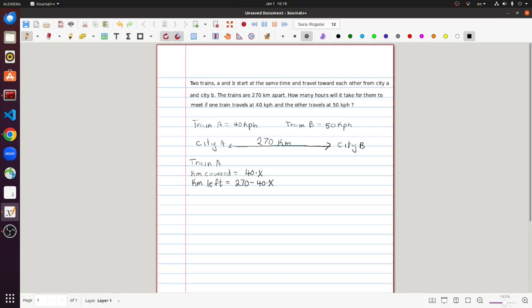And then for train B, similarly, it would be these. These are the formulas for train B. The kilometers covered is 50x and the kilometers left is 270 minus 50x.